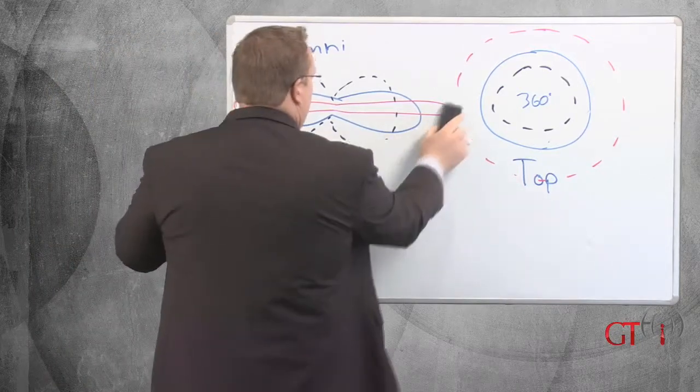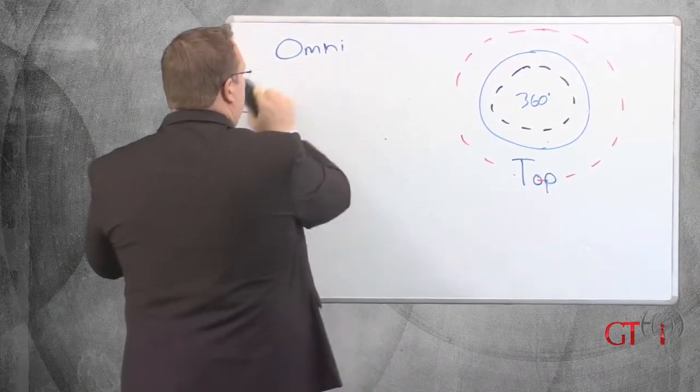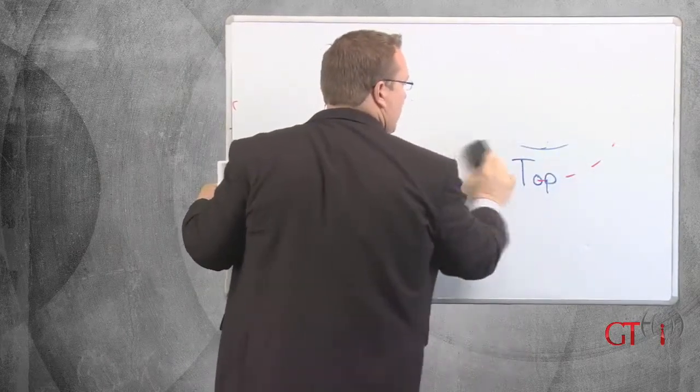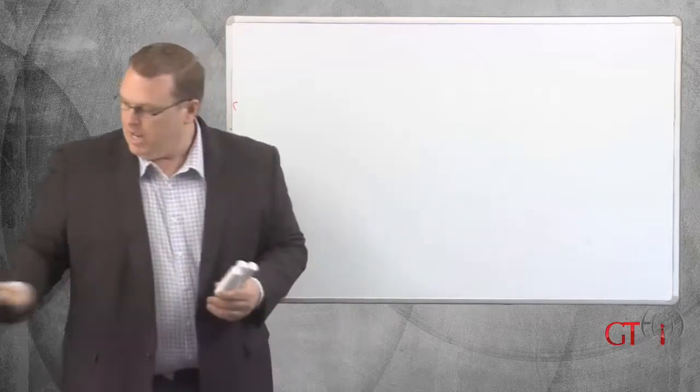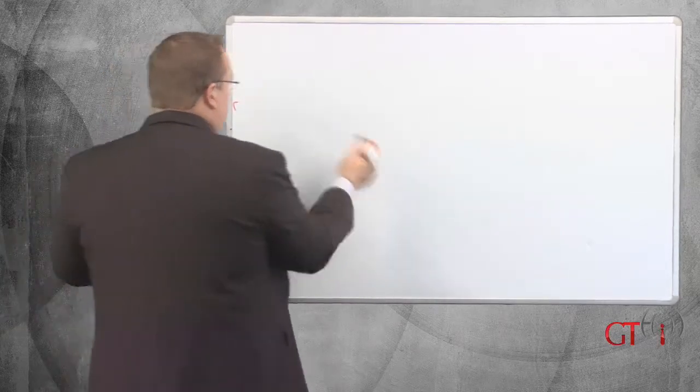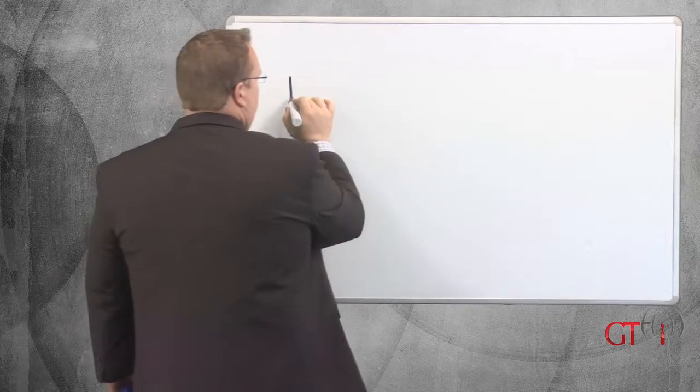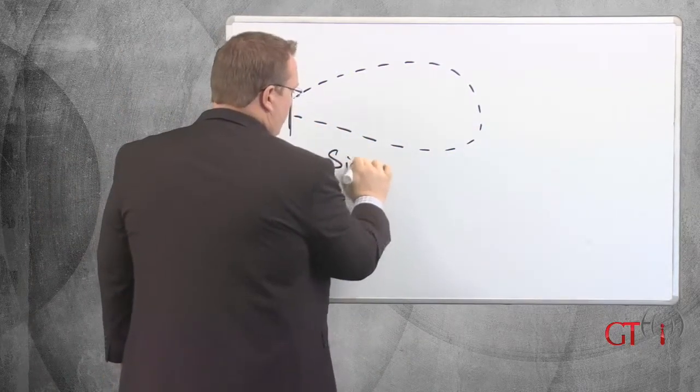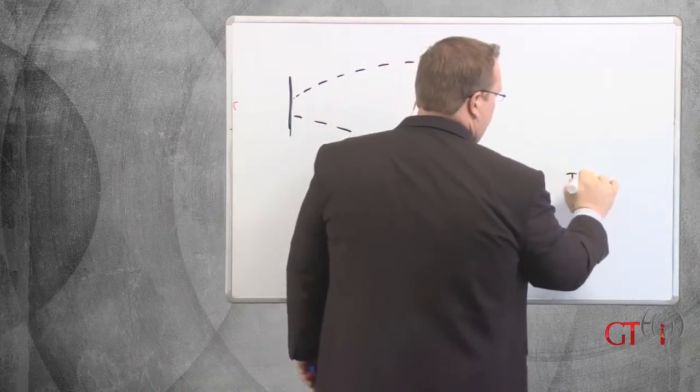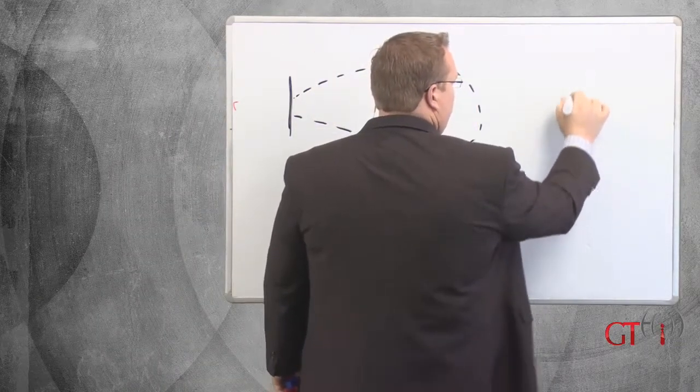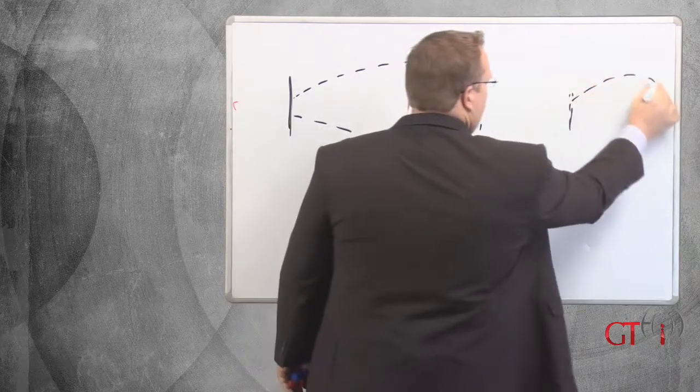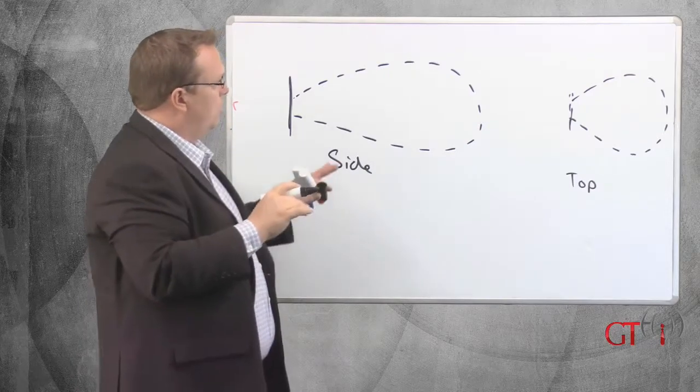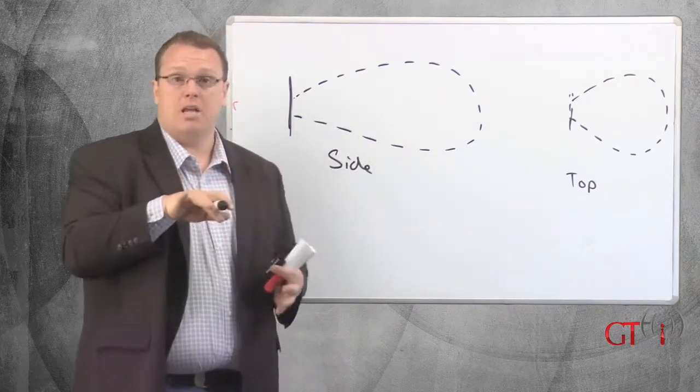The next is semi-directional. A semi-directional antenna, as you can imagine, is not omni. It's not transmitting in a circle. It may have a pattern. Let's say the antenna is right here. It may have a pattern that looks something like that. This is your side view. Your top view. Instead of the circle like we showed before, the top view may look like this. So basically from the top and the side, they can almost be the same.